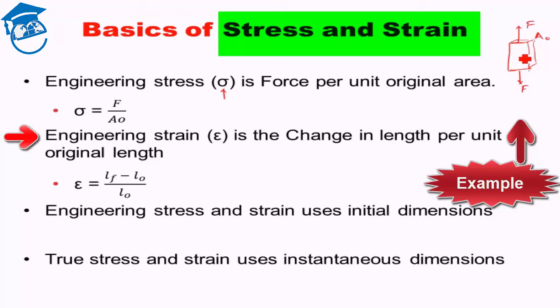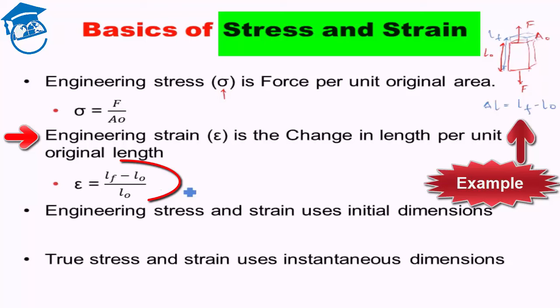A slight change in dimension is taking place — that is what strain denotes. Suppose initially the length was L₀, and on application of force there is an elongation of the body so the final length becomes Lf. The change of length ΔL equals Lf minus L₀, and engineering strain is the change of length per unit original length.